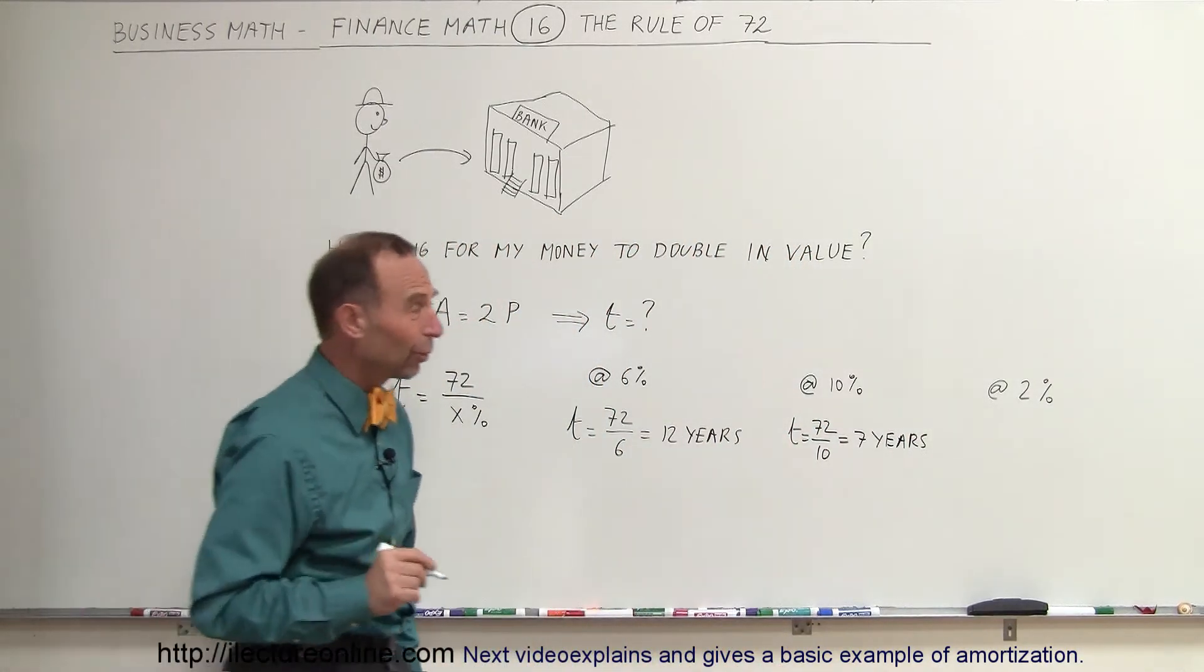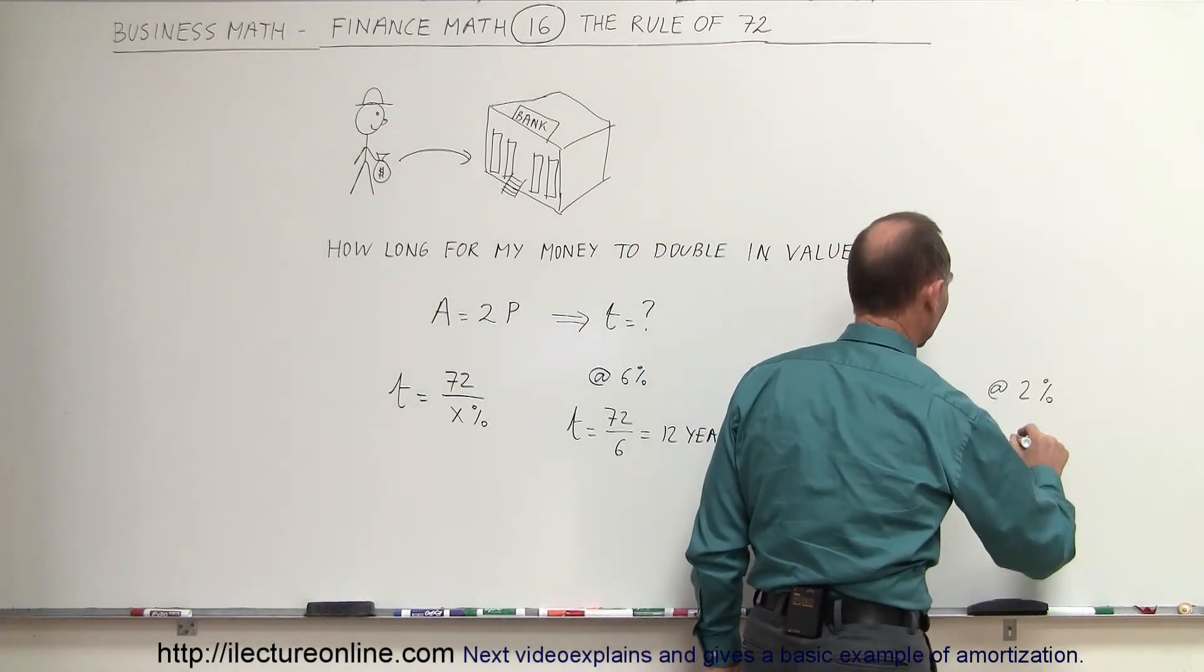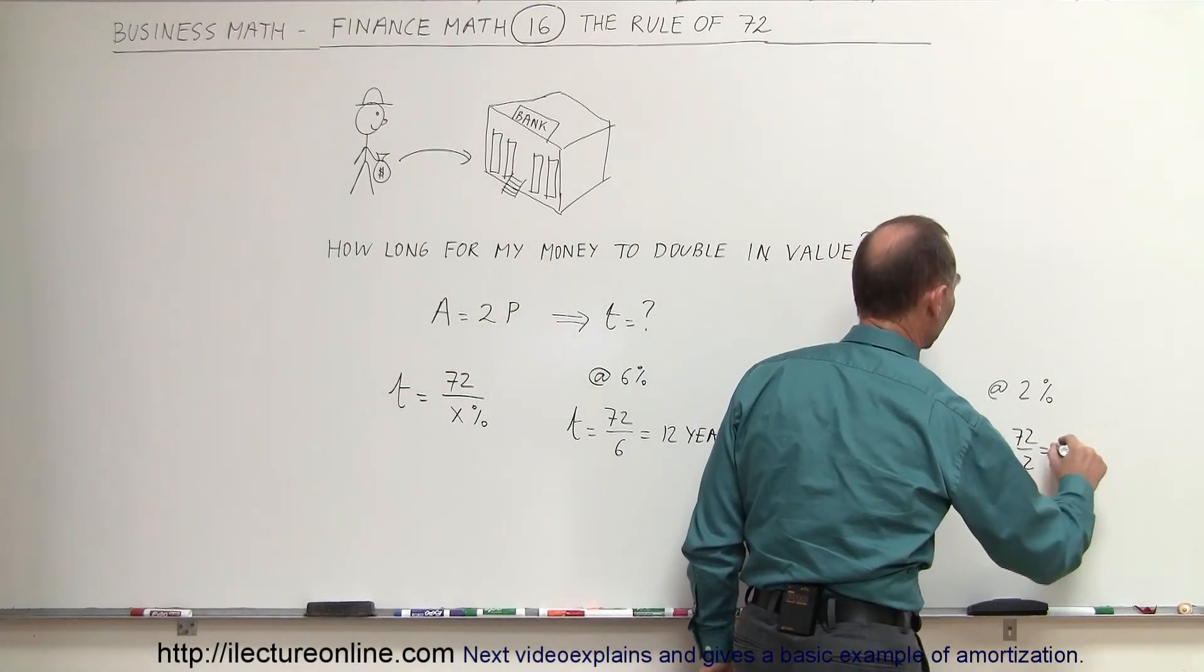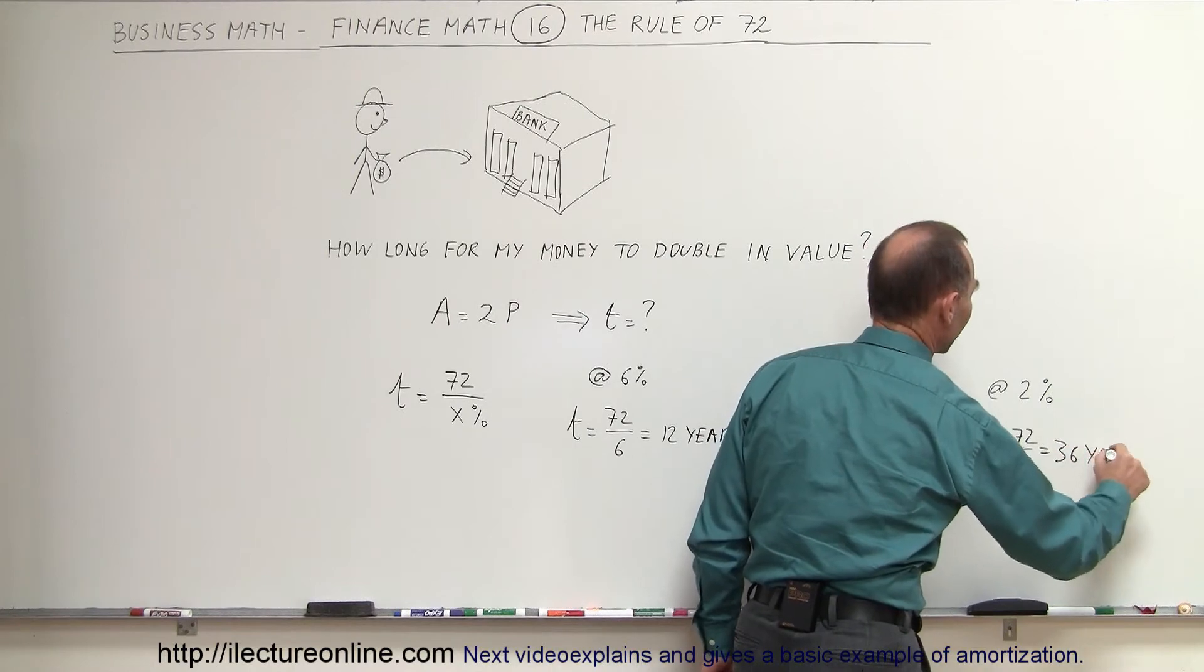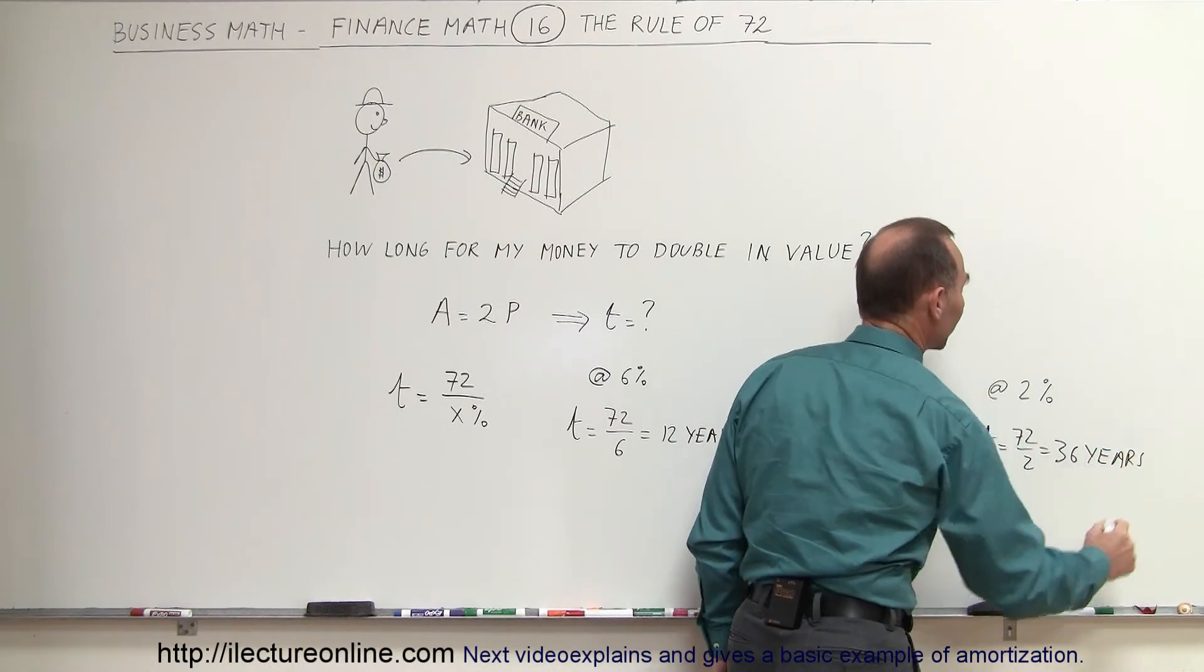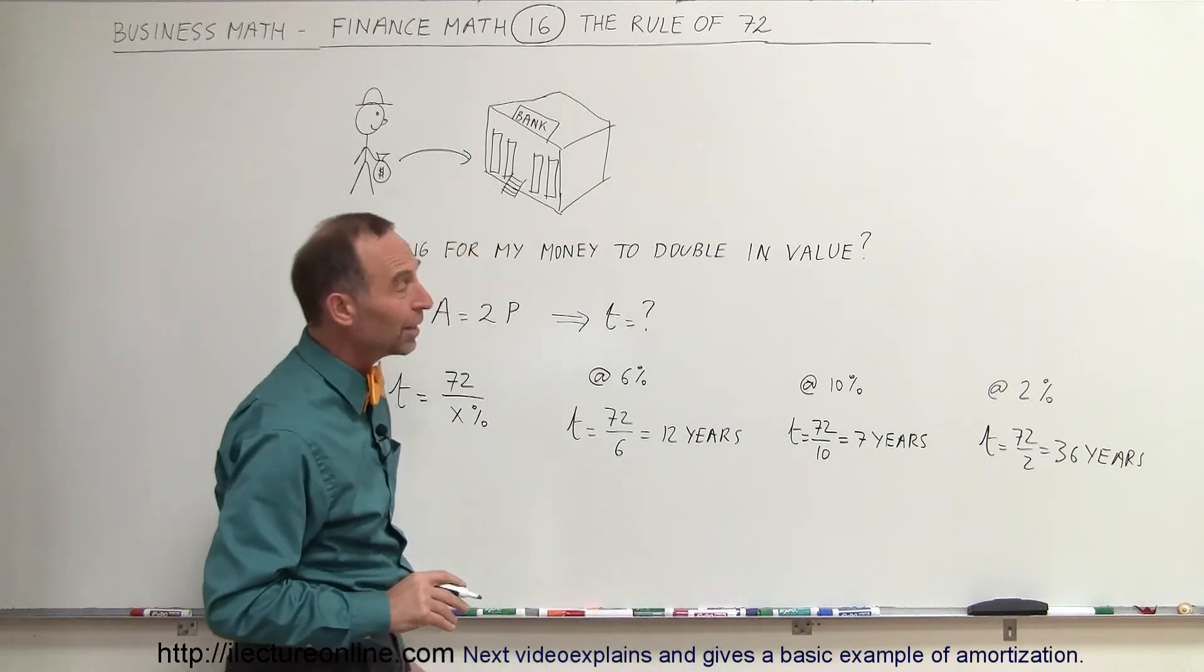At 2%, it doesn't look as good. The time would be equal to 72 divided by 2, which is 36 years. You can see that if you're only going to get 2%, it takes quite a long time to double your money.